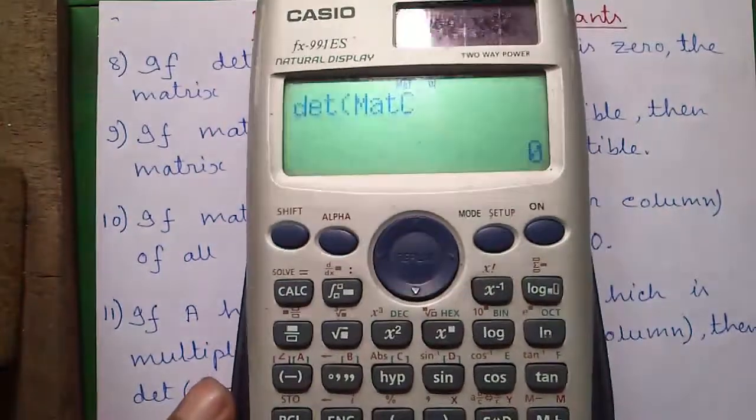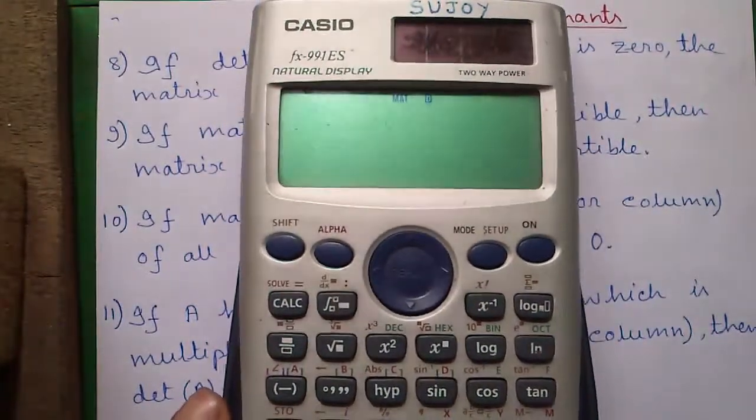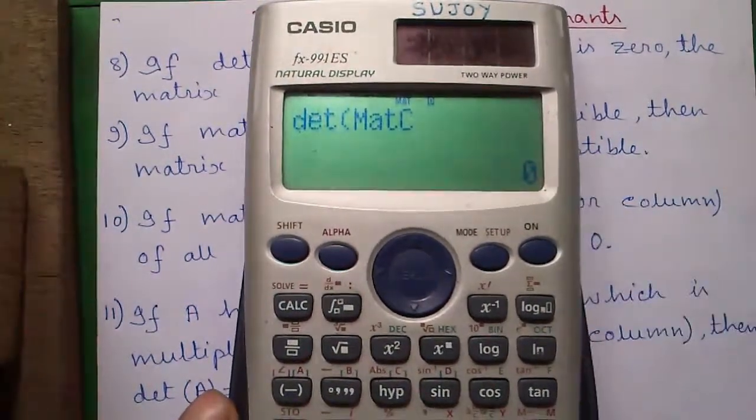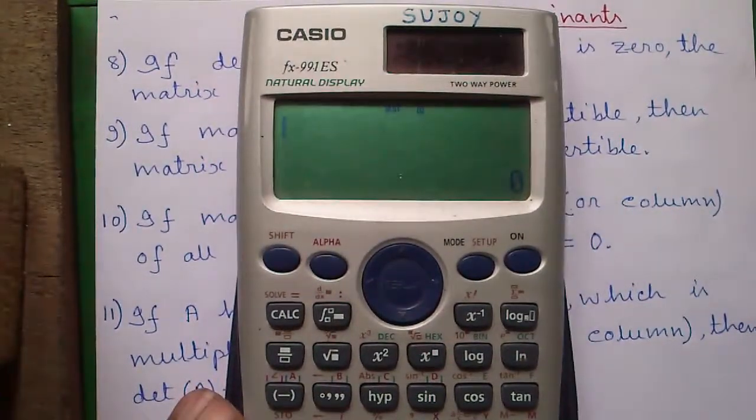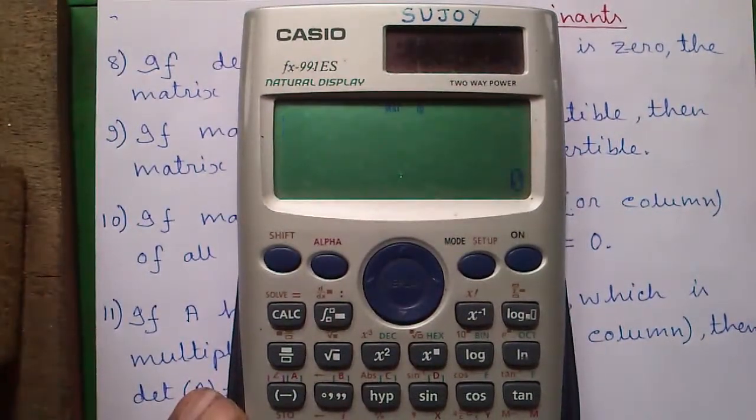So let's find out determinant of our matrix C that is equal to 0. That means we can't find out inverse of matrix C no matter by which process we try to find out the inverse.